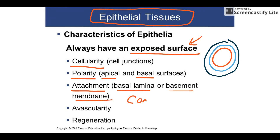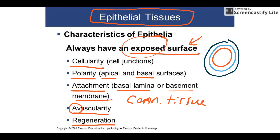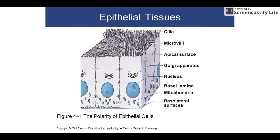Third, attachment — epithelial tissues always have a layer of connective tissue underneath, referred to as either the basal lamina or the basement membrane. Fourth, avascularity — epithelial tissues have very little in the way of a blood supply. Fifth, regeneration — they have a really high mitotic rate because they're always exposed and die off at a much higher rate, and since they have little blood supply the cells are essentially starving.